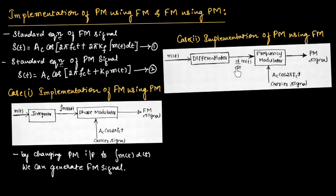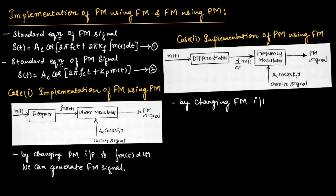By changing the input of the frequency modulator to d/dt·M(t), we can generate the phase modulated signal as shown in this figure. To get the differentiation of M(t), we can use a differentiator with input M(t) to get the output d/dt·M(t). So we can say, by changing the frequency modulator input to d/dt·M(t), we can generate the phase modulated signal.